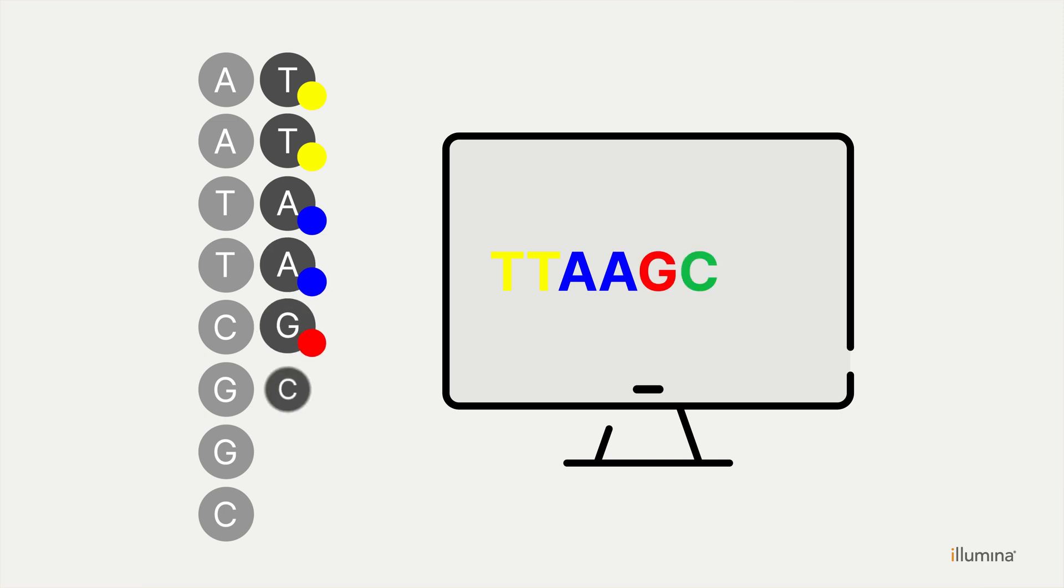Once the prepared samples are added to the sequencing instrument, they are amplified using differentially labeled nucleotides. As each nucleotide is added, the machine reads its corresponding fluorescent color, revealing your sample sequence.